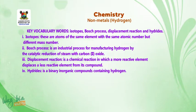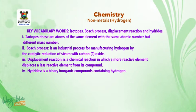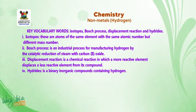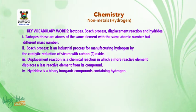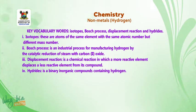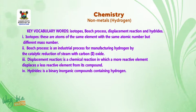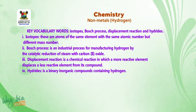Key vocabulary words for this lesson are: isotopes, Bosch process, displacement reaction, and hydrides. 1. Isotopes — these are atoms of the same element with the same atomic number but different mass number. 2. Bosch process — it's an industrial process for manufacturing hydrogen by the catalytic reduction of steam with carbon monoxide. 3. Displacement reaction — it's a chemical reaction in which a more reactive element displaces a less reactive element from its compound. 4. Hydrides.